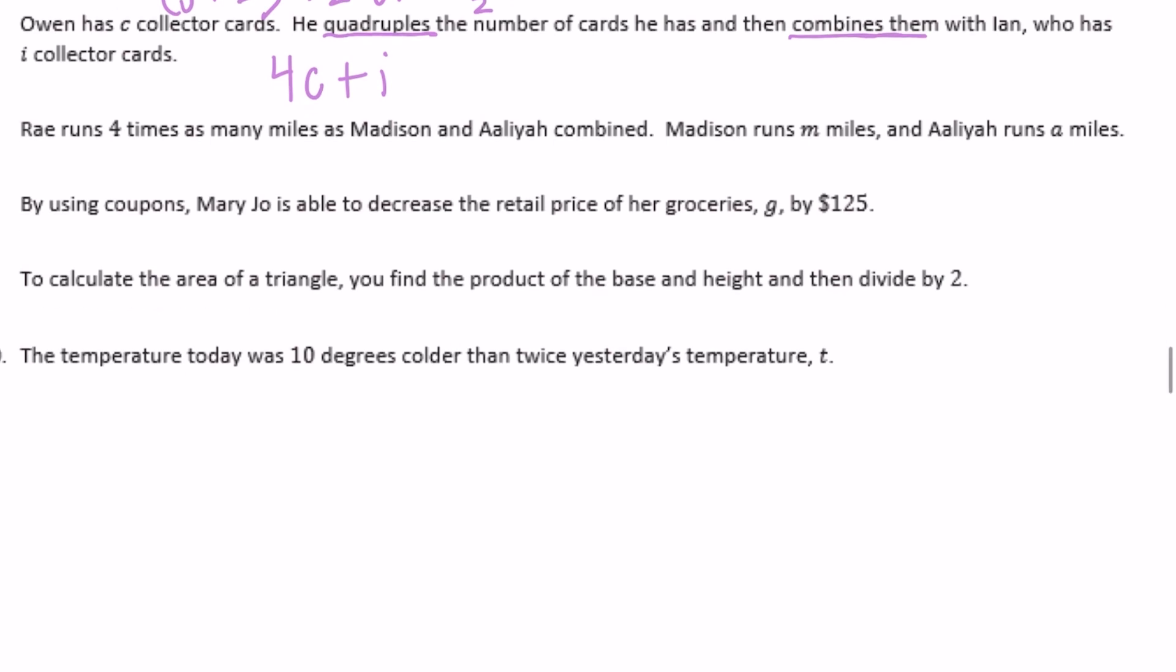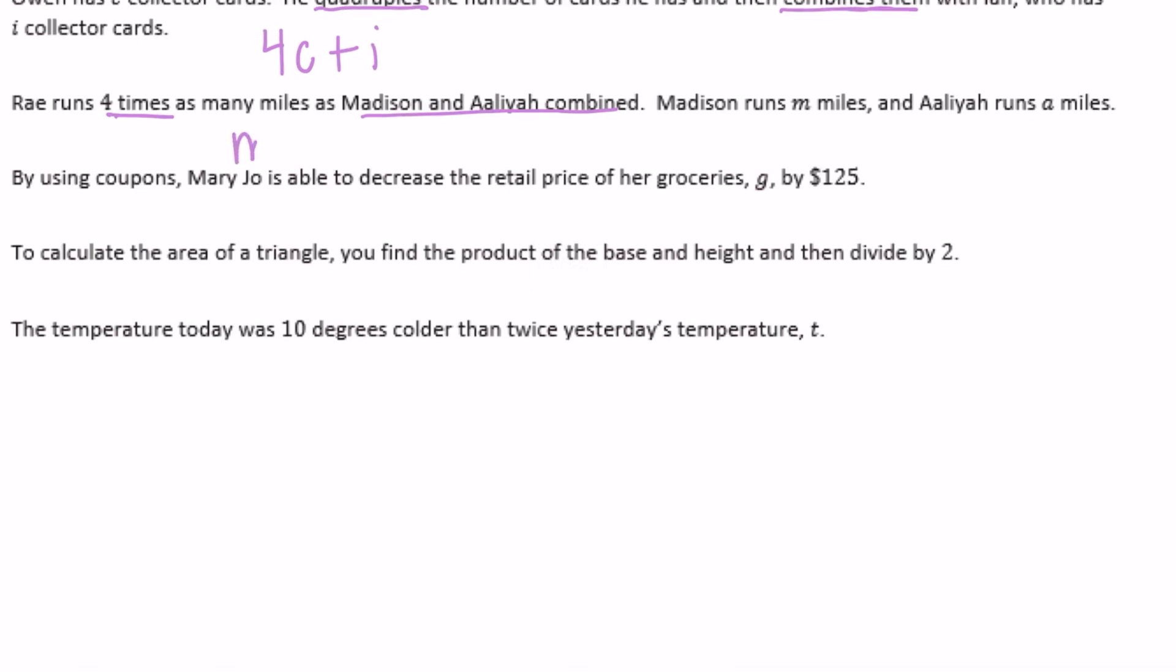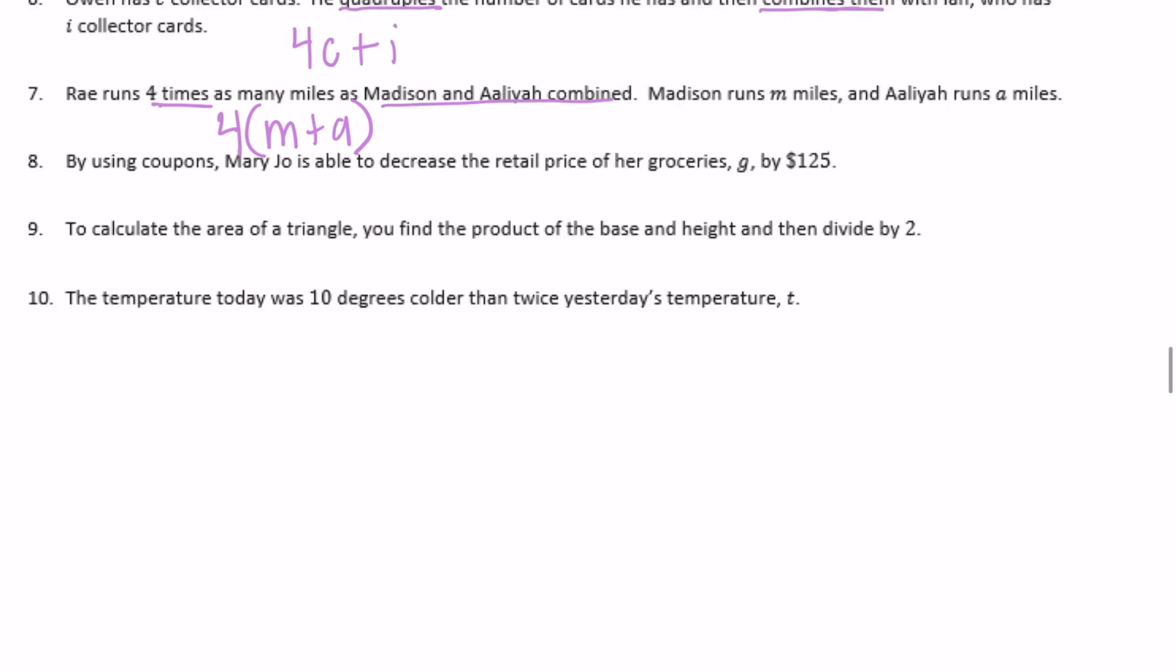Number seven: Ray runs four times as many miles as Madison and Aaliyah combined. Madison runs M miles and Aaliyah runs A miles. Madison and Aaliyah combined means adding them: M + A. We want to keep those together. Four times that many, so we have 4(M + A).